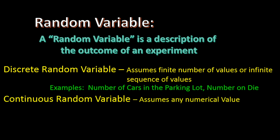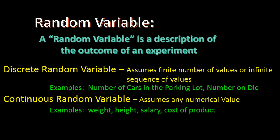On the other hand, a continuous random variable can take on any numerical value in an interval of numbers. So if we look at the weight of an item, the weight can take on any value depending on how precise the scale we measure it with.